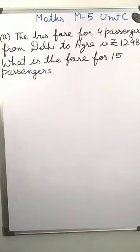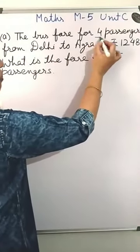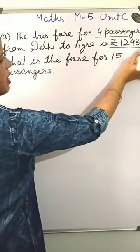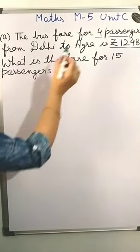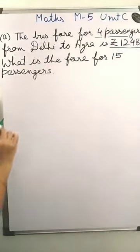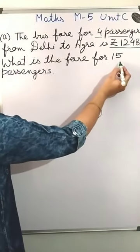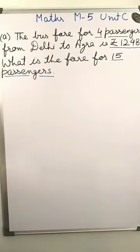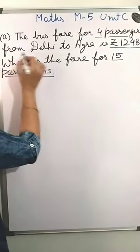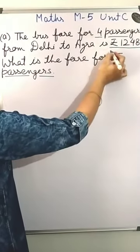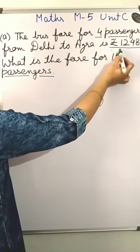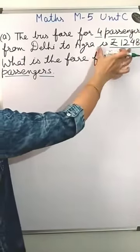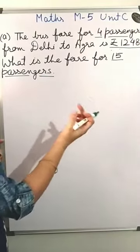The next question is: the bus fare for 4 passengers from Delhi to Agra is rupees 1248. In this question, fare for 4 passengers is given to you. And what is the fare for 15 passengers? You have to calculate the fare for 15 passengers. First, from the first line, you calculate fare for one passenger. Whenever we are calculating value for one, we divide.